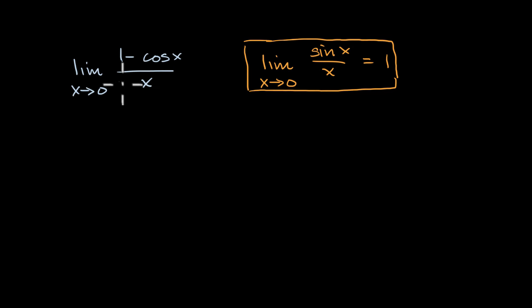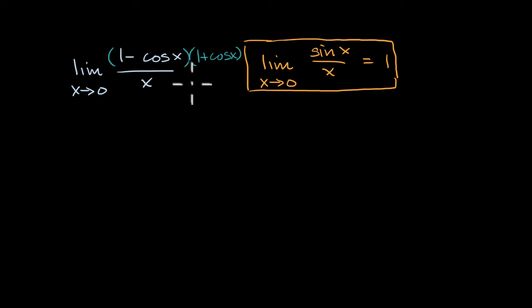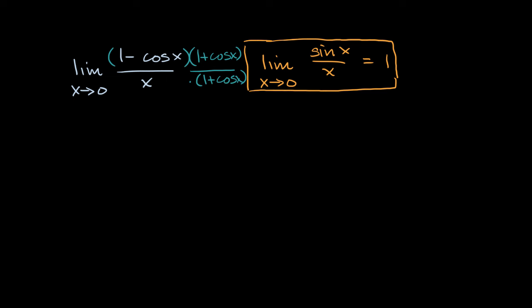So let's see if we can work this out. The first thing we're going to do is algebraically manipulate this expression a little bit. What I'm going to do is multiply both the numerator and the denominator by one plus cosine of x — the same thing in the denominator. I'm not changing the value of the expression; this is just multiplying it by one.